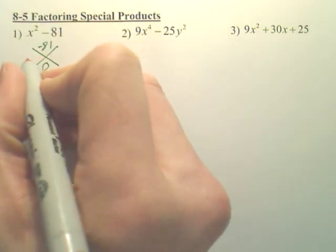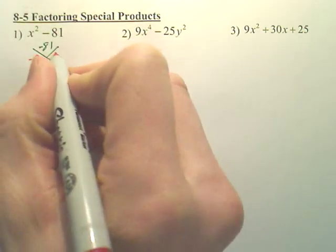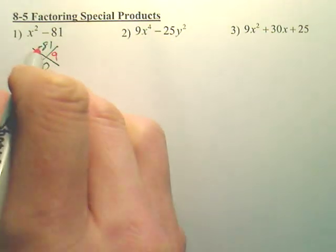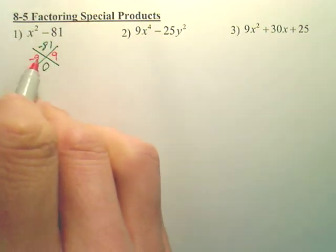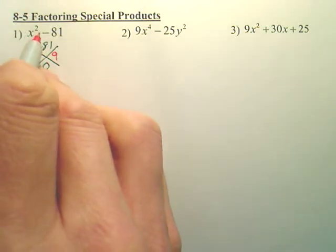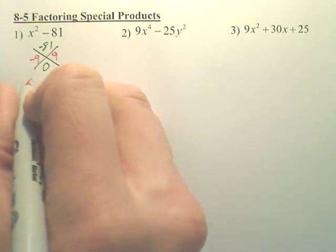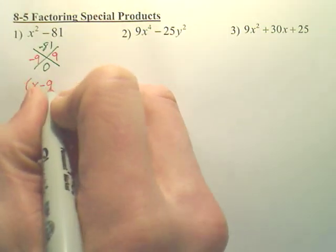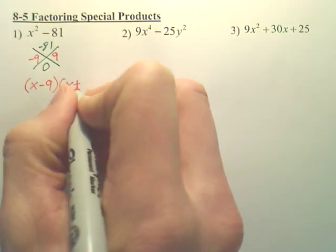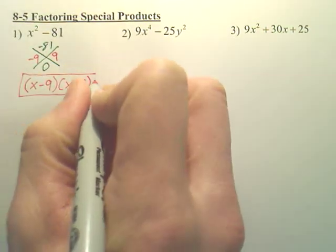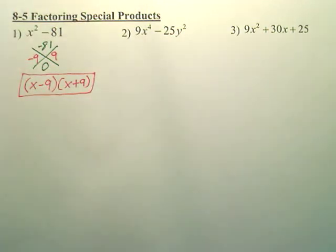That would leave you with a negative 9 and a 9. Negative 9 times 9 is negative 81. Zero on the bottom. You add those, get zero. Again, the zero came because there's zero x's. And then your answer is x minus 9, x plus 9.